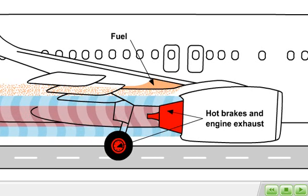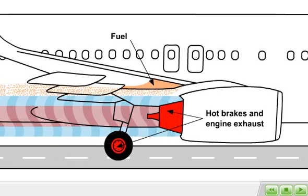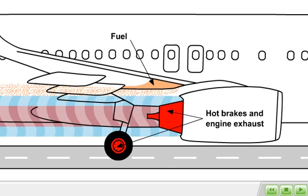Upon engine shutdown, the fuel was able to drip onto the tailpipe of the engine and onto the hot brakes, resulting in ignition.